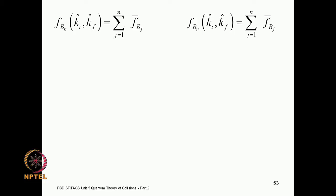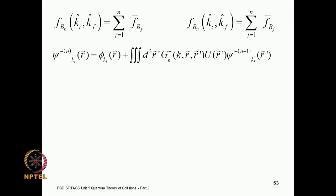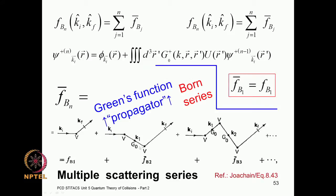This is the main story: the Born series is a sum of all these terms, representable by diagrams. In the second-order term the potential appears twice — it is as if the particle incident in state ki gets multiply scattered: scattered in the scattering region, then scattered again, and so on. The number of times the potential appears in the Born series corresponds to the number of scatterings. This is essentially a multiple-scattering series.